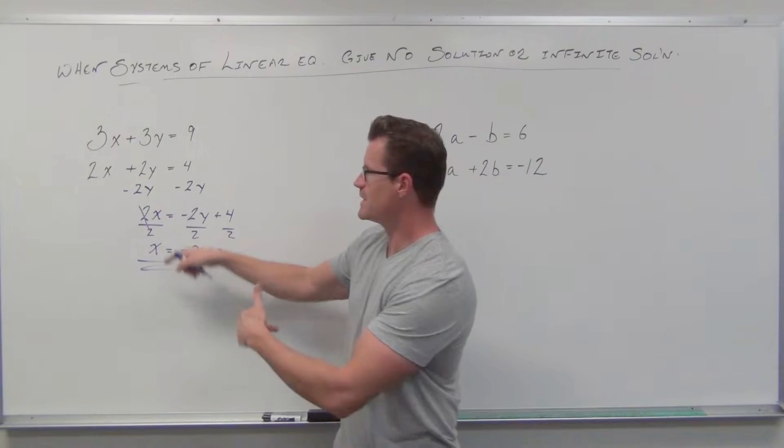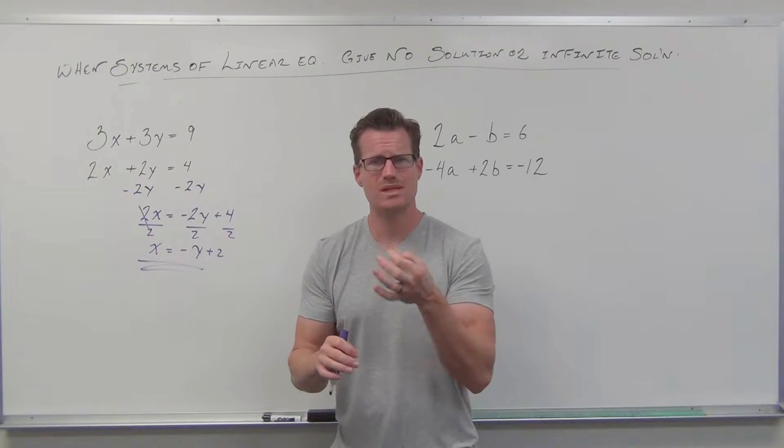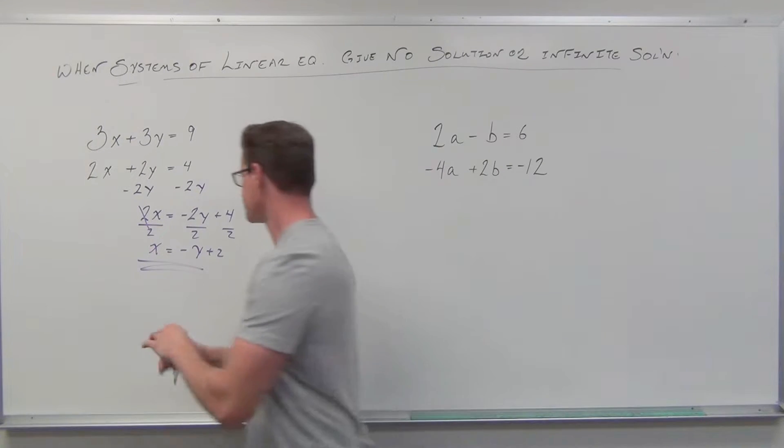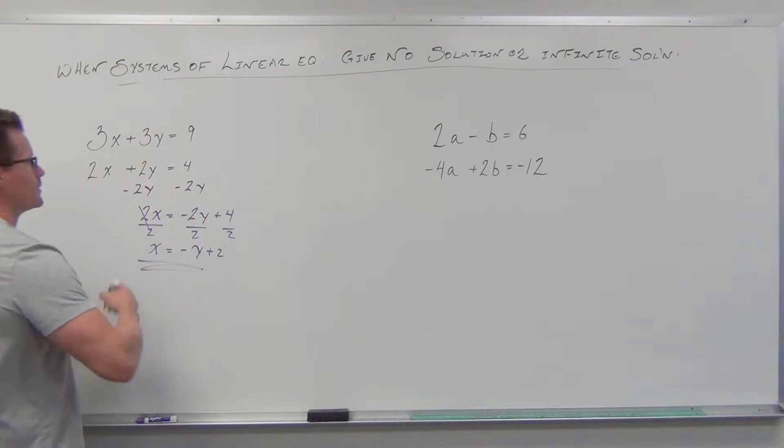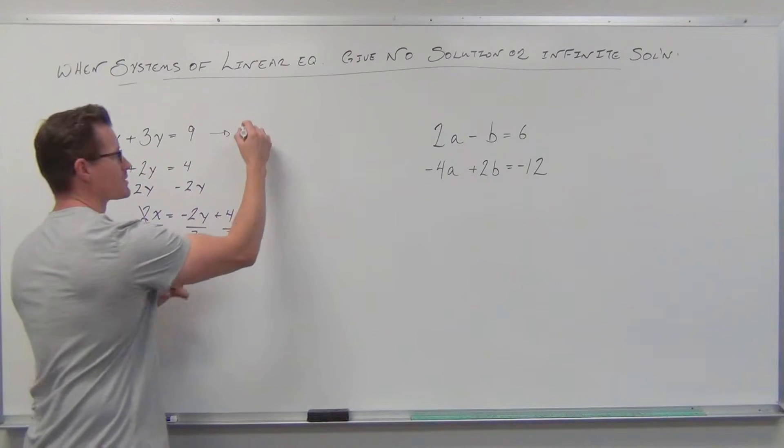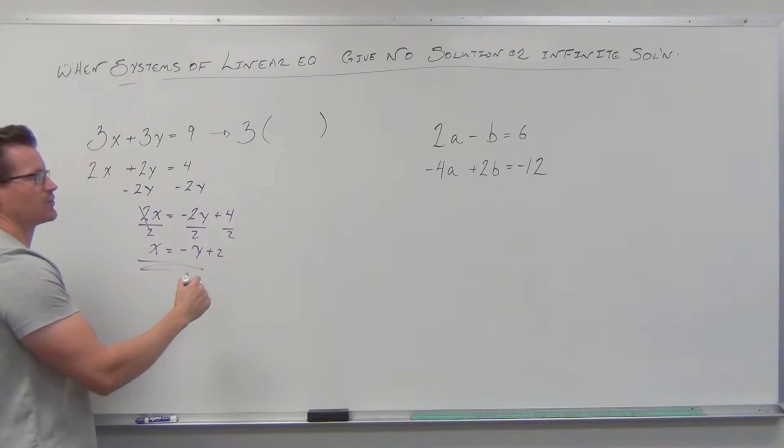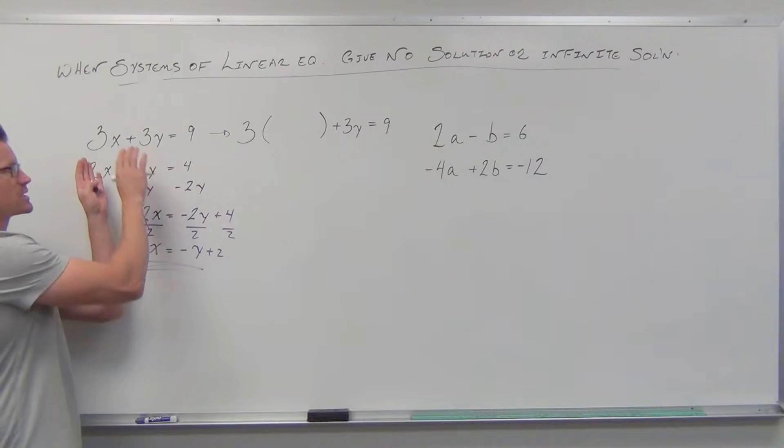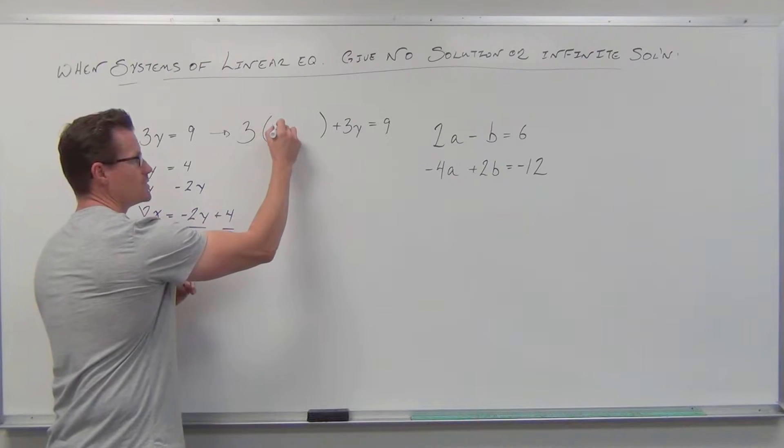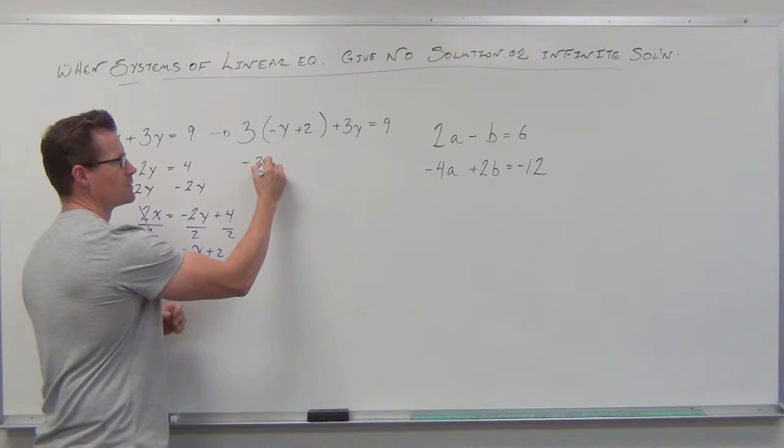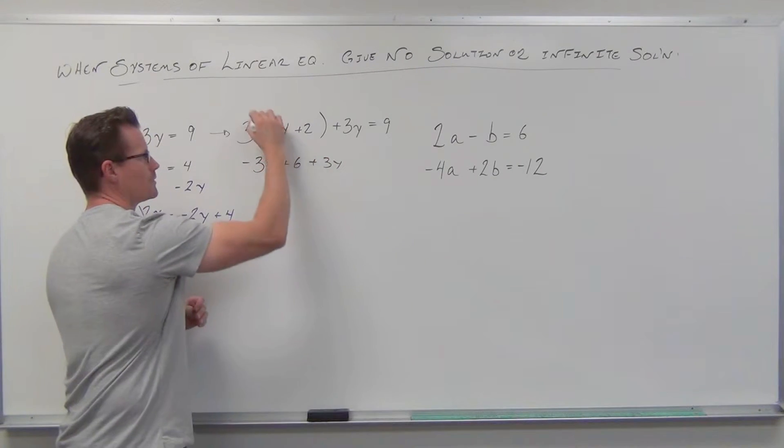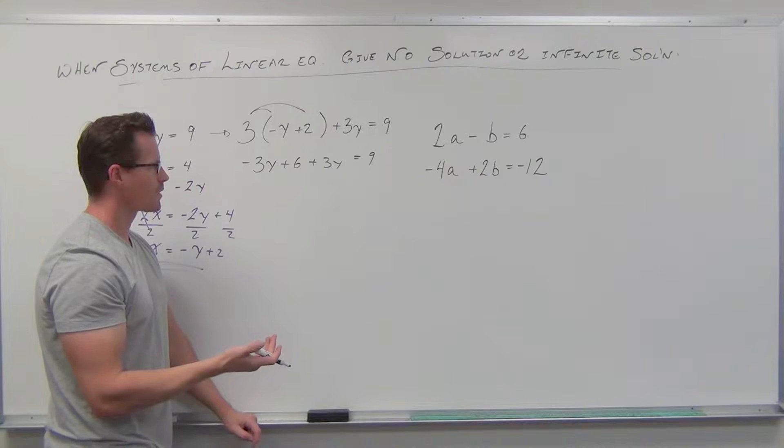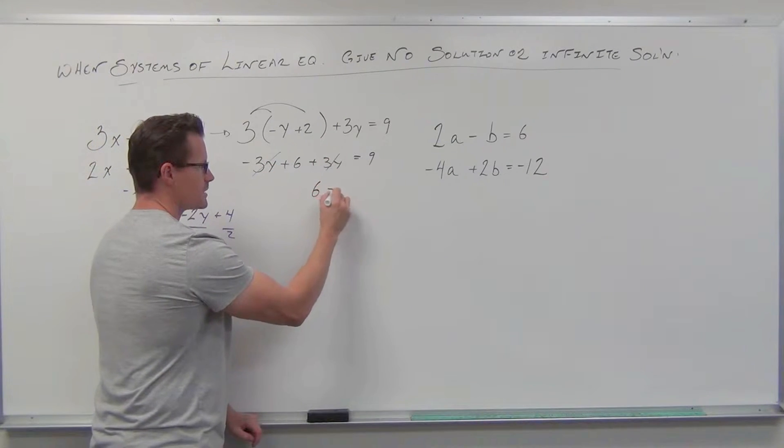That right there lets me substitute for x in the other equation. If these x's are the same, saying I'm looking for where these cross, I want my x's to be the same at that point. They have to be. If our lines are equal at that point, then our x's also have to be equal. So this becomes not 3x, but 3(-y + 2) plus 3y equals 9. Instead of this x, I'm replacing with what x is equal to. Then we're going to distribute. We're going to combine some like terms. What happens? Our y's disappear. And we get 6 equals 9.